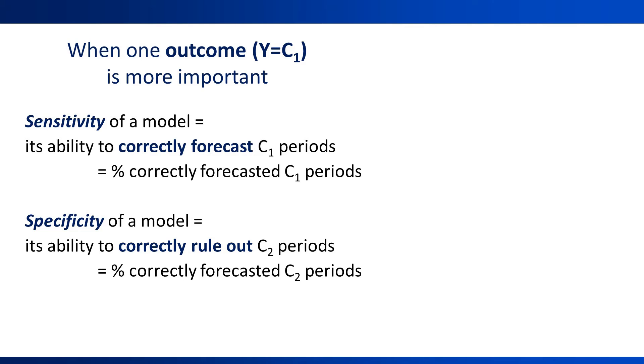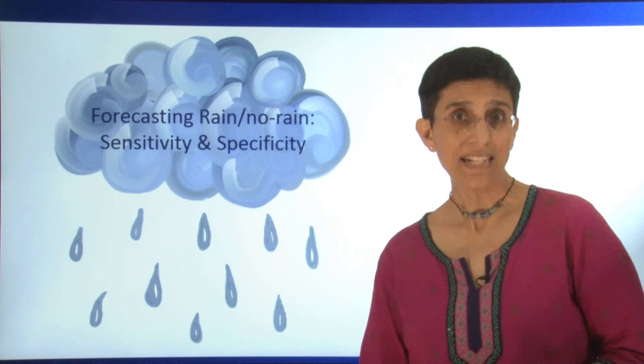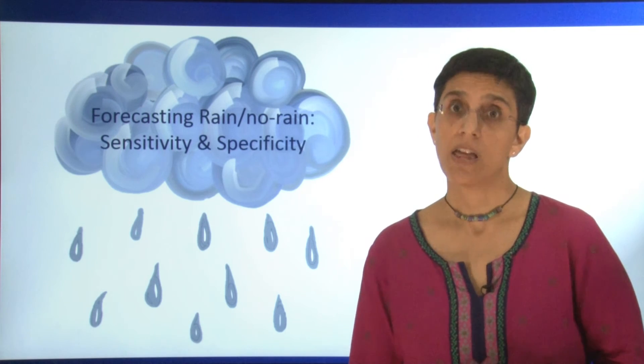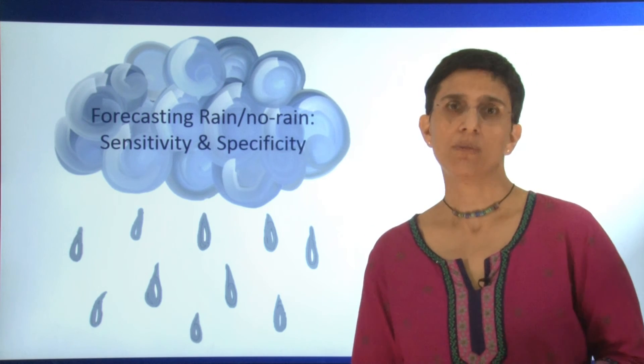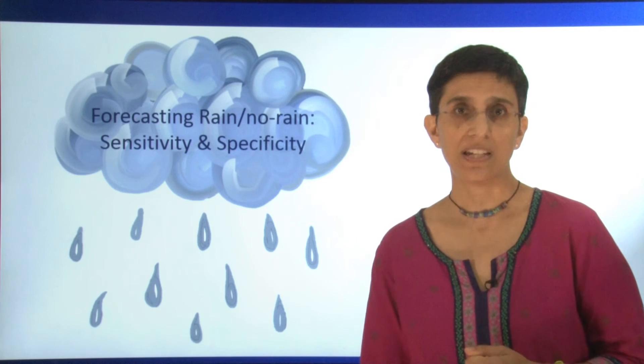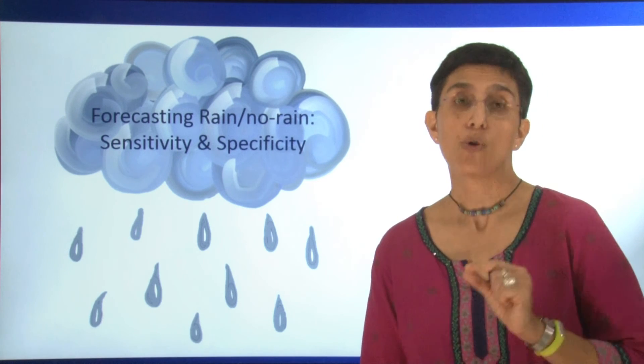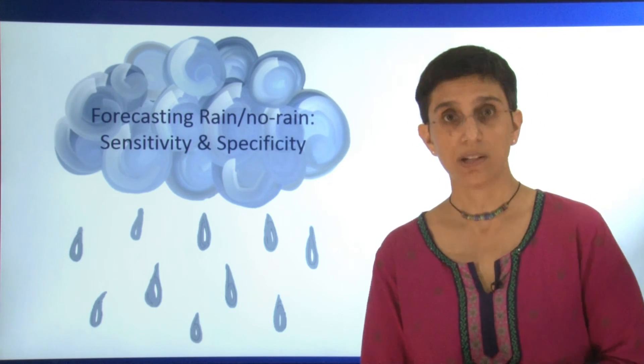They are useful when one outcome or one class is more important than the other. If rainy days are more important to us than non-rain days, then we would compute sensitivity and specificity with respect to rain. Rain would be our one and no rain would be our zero.